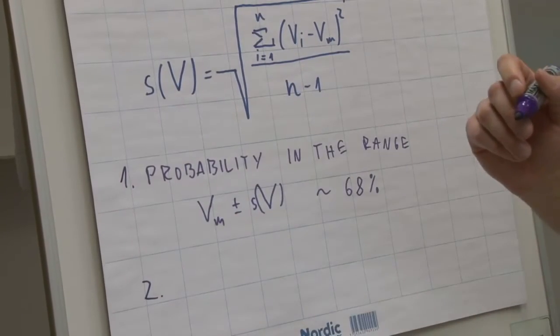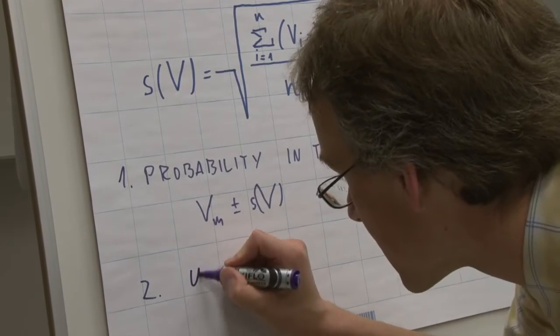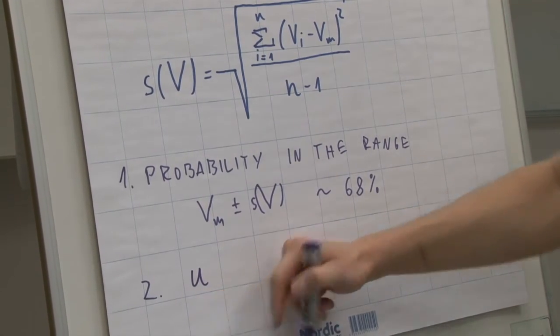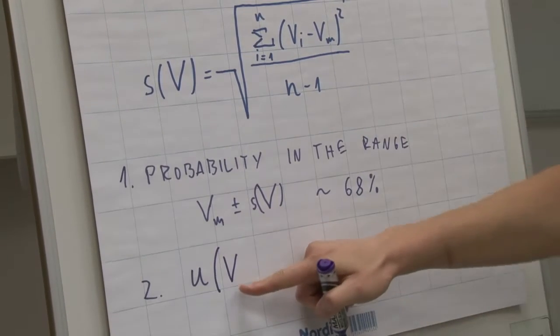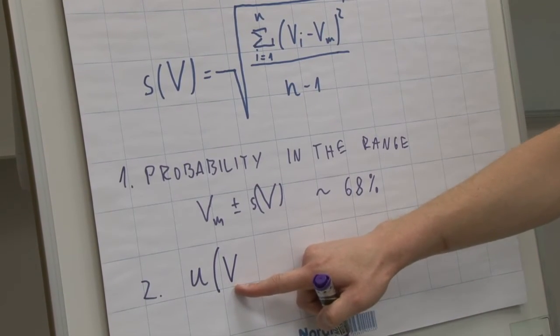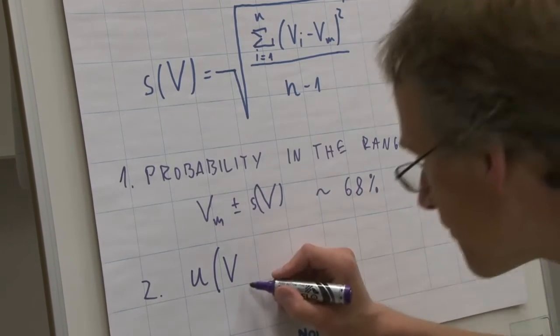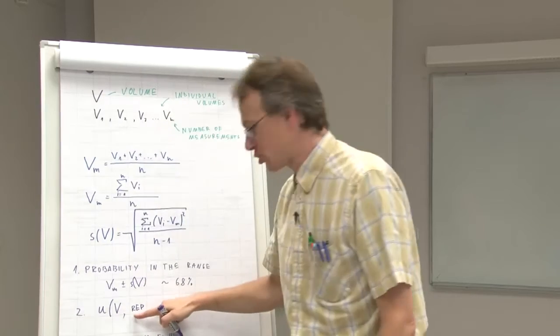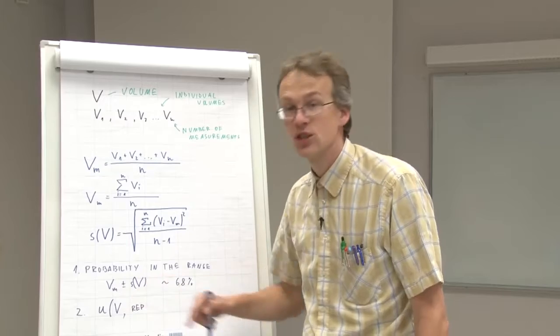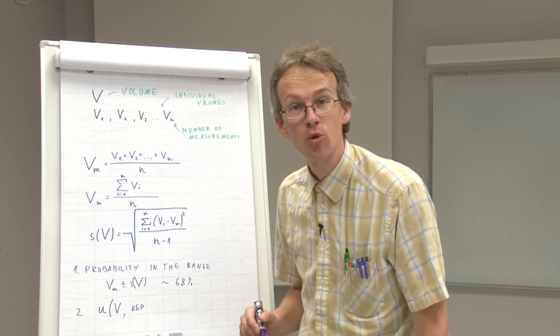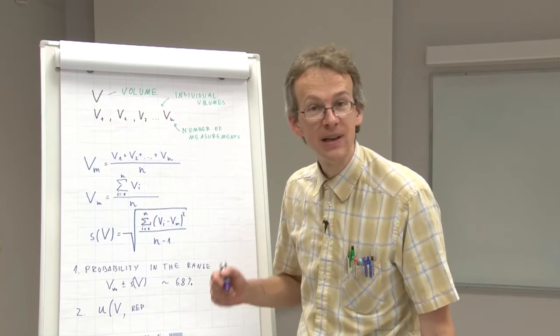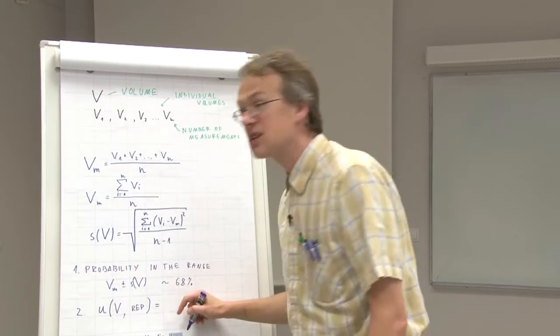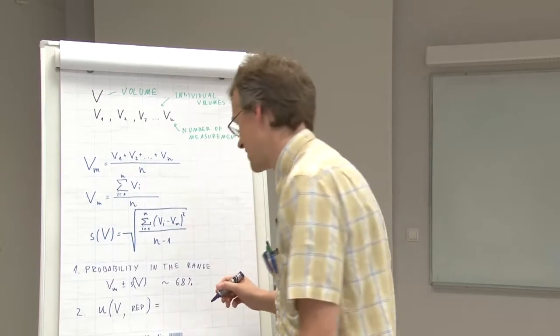We can speak about the standard uncertainty denoted by small u of this volume, which we measure by pipetting due to repeatability. This is one of the uncertainty components, the repeatability uncertainty component, and this is equal to this same standard deviation.